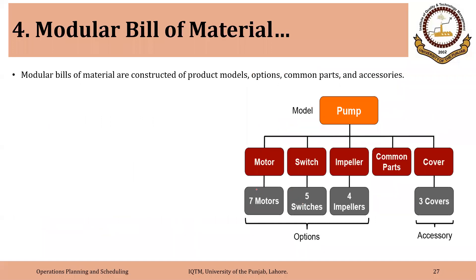In this example, we have seven different types of motors, and the customer can choose from five types of switches and four types of impellers. There are also some common parts that must be used regardless of the combination selected. Additionally, there is an accessory — covers — that is an optional feature the customer can choose not to select. The product will still work without a cover, so covers are classified as an accessory.